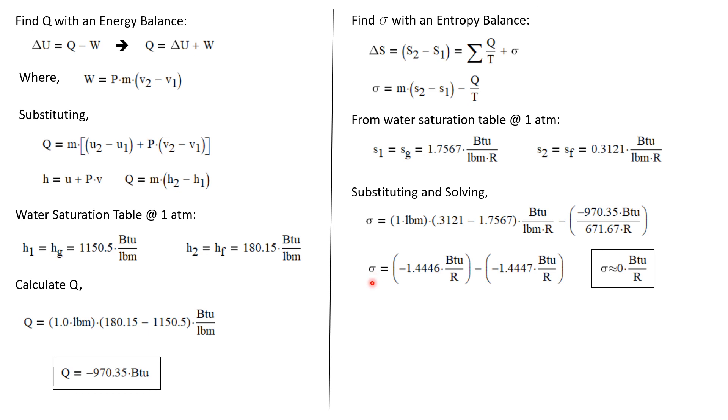So what I get when I solve this equation is that sigma is minus 1.4446 minus a negative 1.4447. In other words, entropy production is approximately 0 BTUs per degree R. If this small error from zero is in fact an error, and if the entropy production is actually zero, then this is a reversible process.